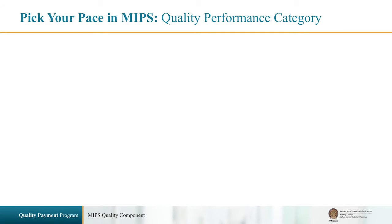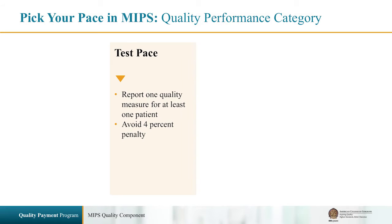2017 is a transition year, which means you can pick your pace of participation. To avoid the penalty, you can choose to report the minimum amount of data. For quality, the minimum could be one measure for just one patient.